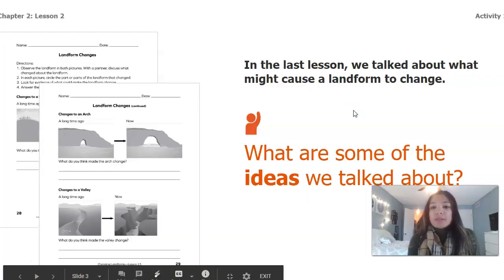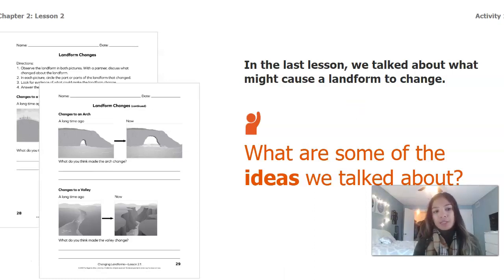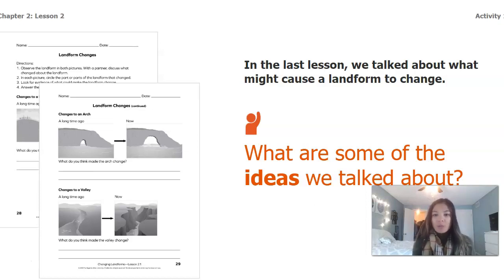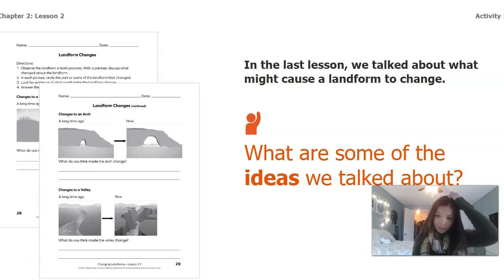In the last lesson we talked about what might cause a landform to change, and we looked at a couple different examples of the beach, the arch, and the valley. So what are some of the ideas that we have talked about? I want you to pause the video and talk to somebody at home or think about what are some of the things we talked about for making landforms change.